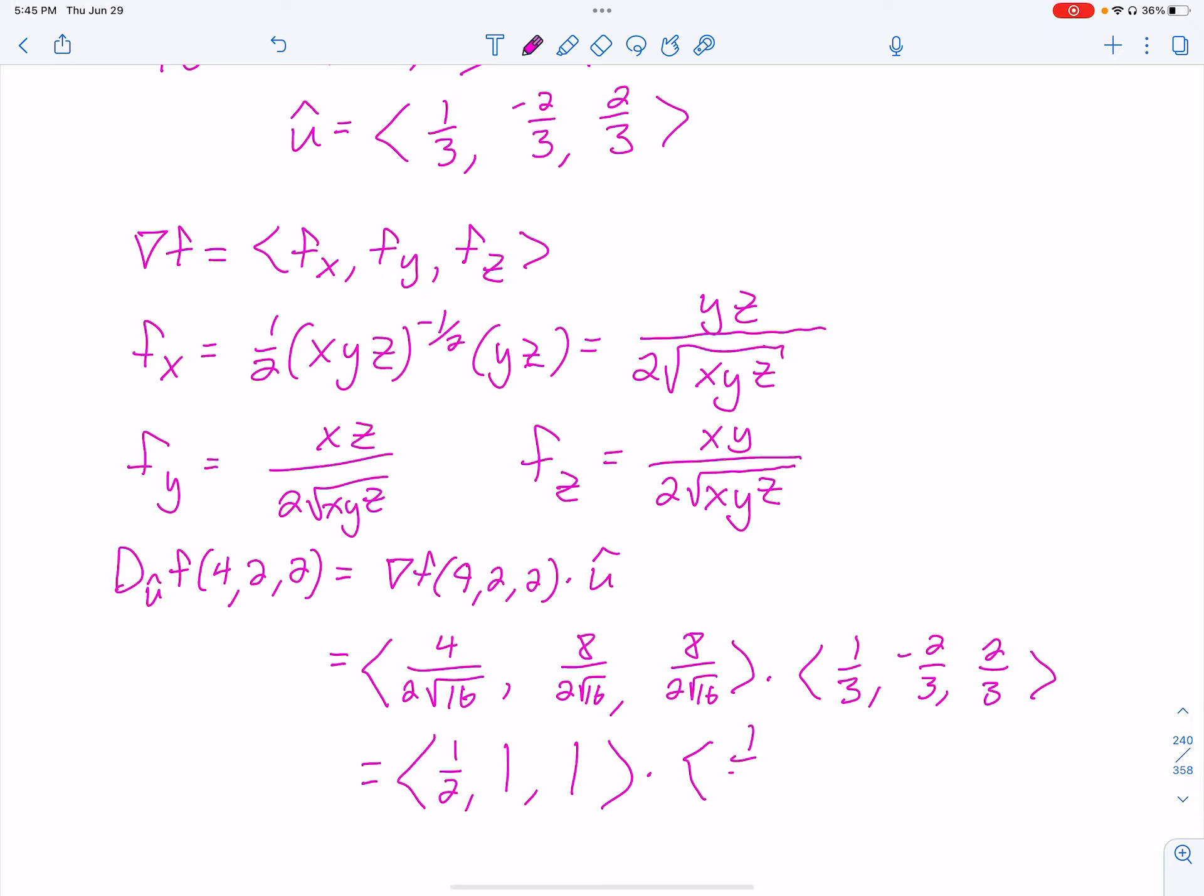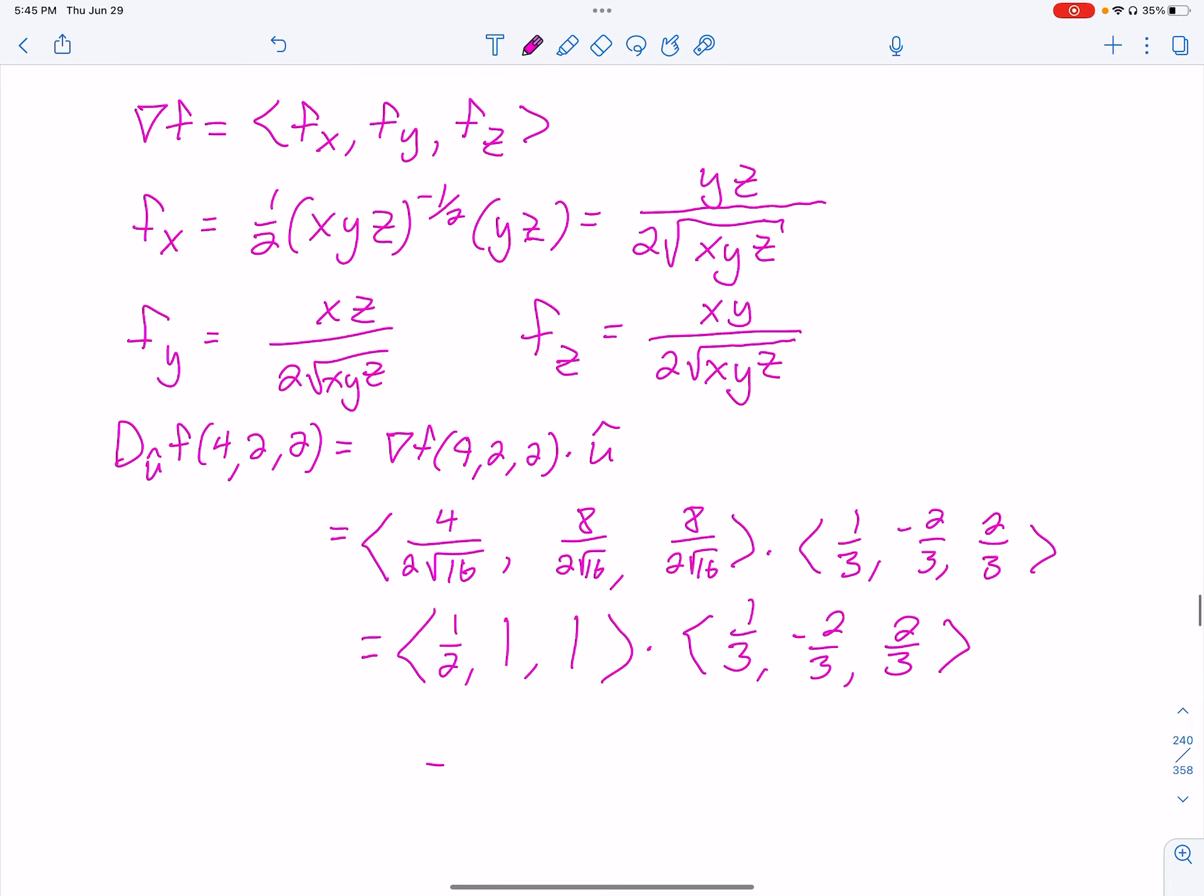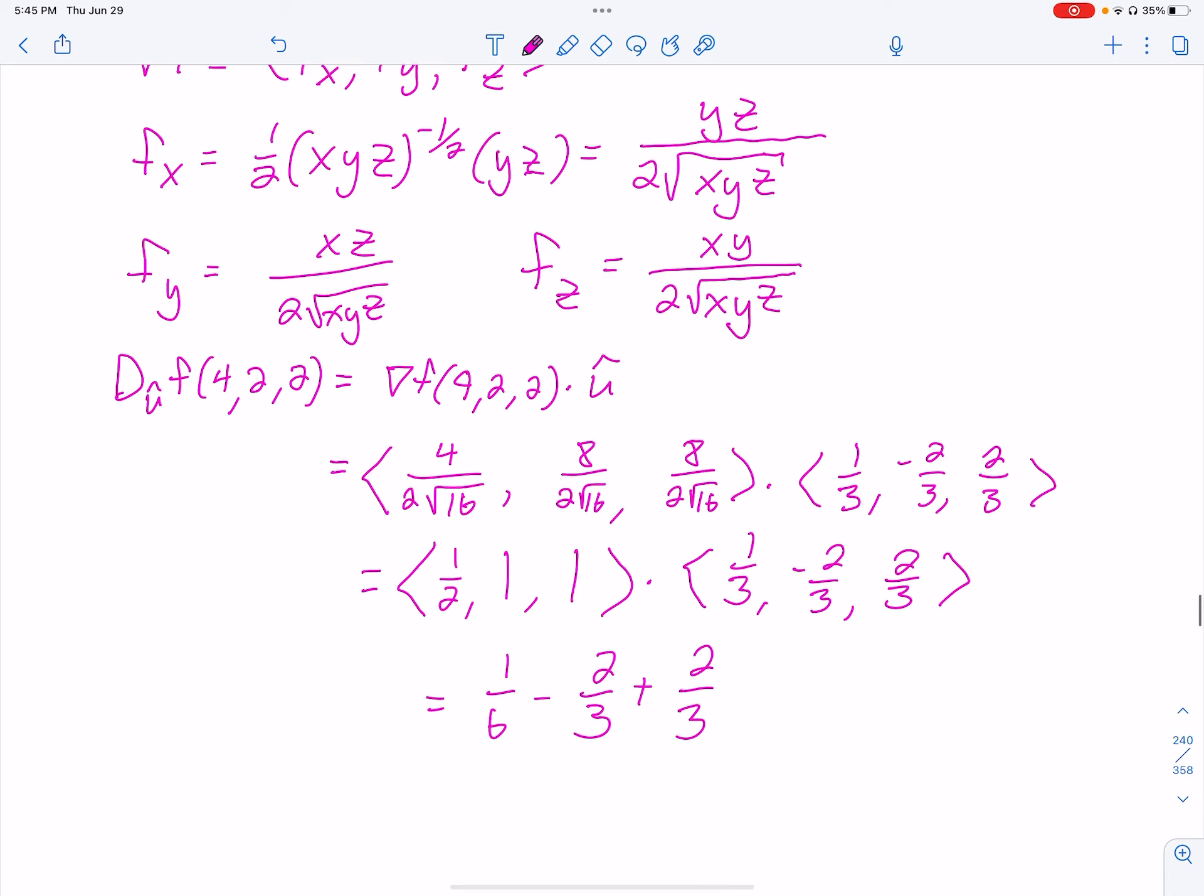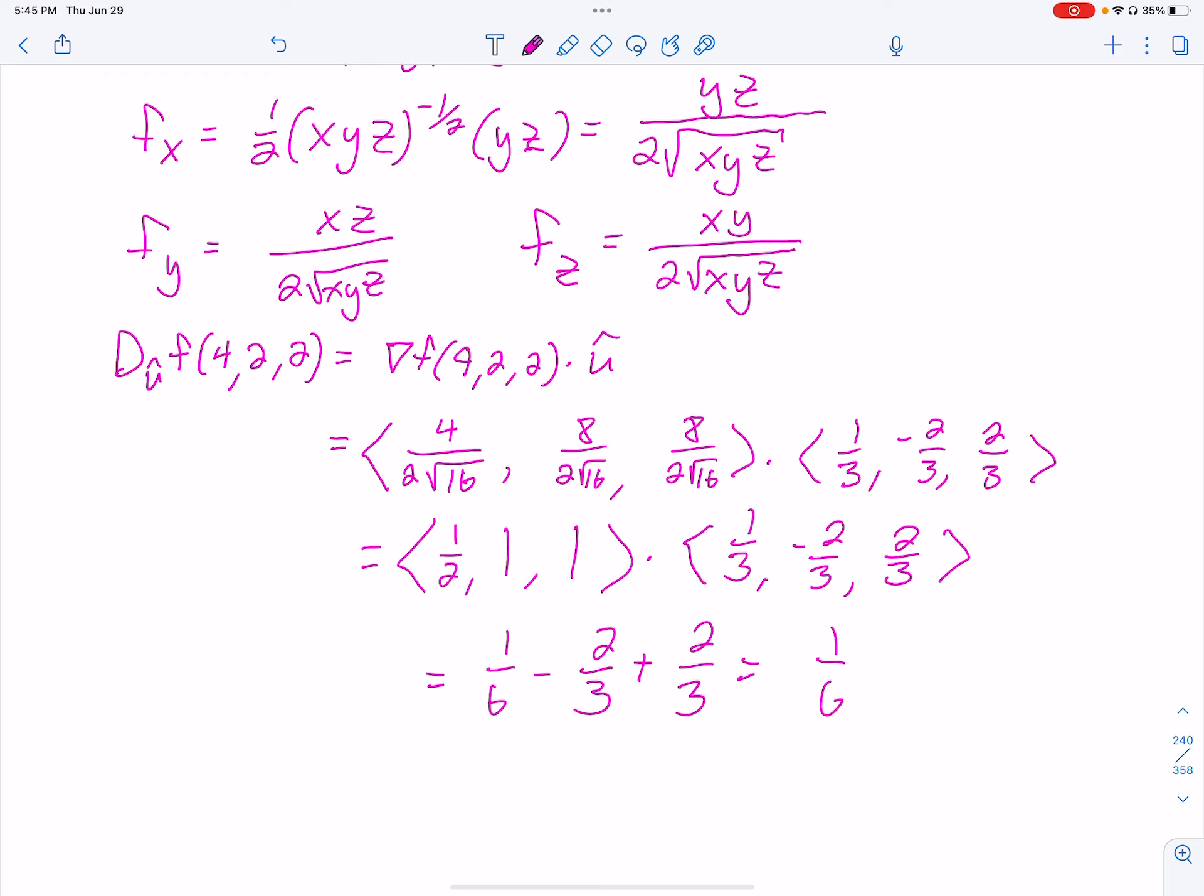Okay, dotted with 1 third, negative 2 thirds, 2 thirds. And then we dot that, so I got 1 sixth minus 2 thirds, plus 2 thirds, giving us a 1 sixth.